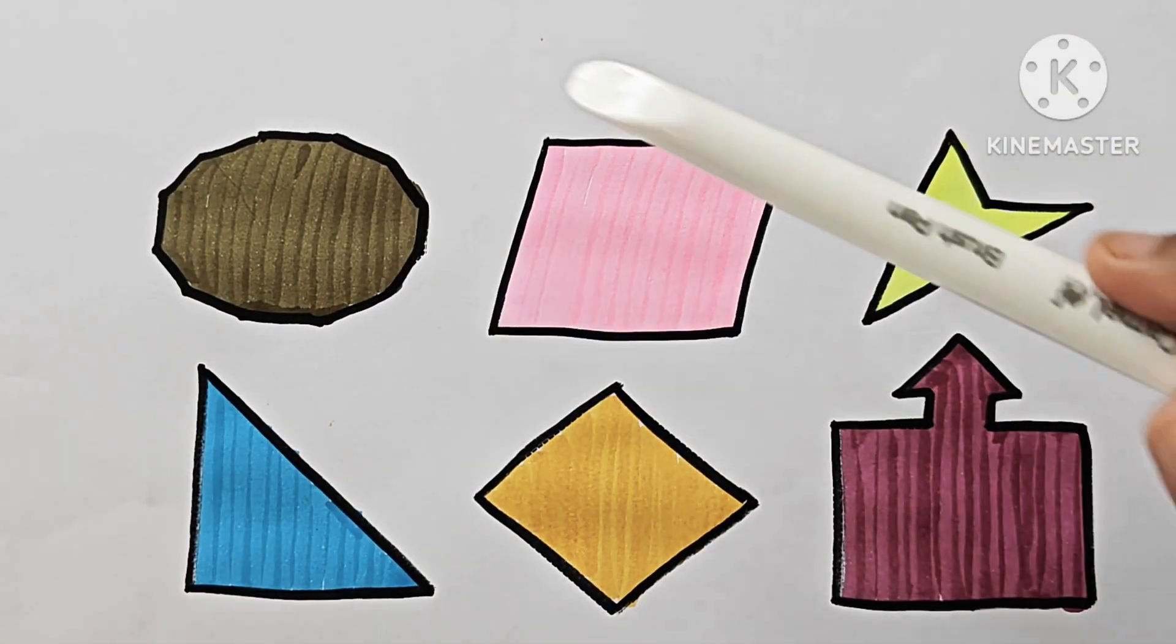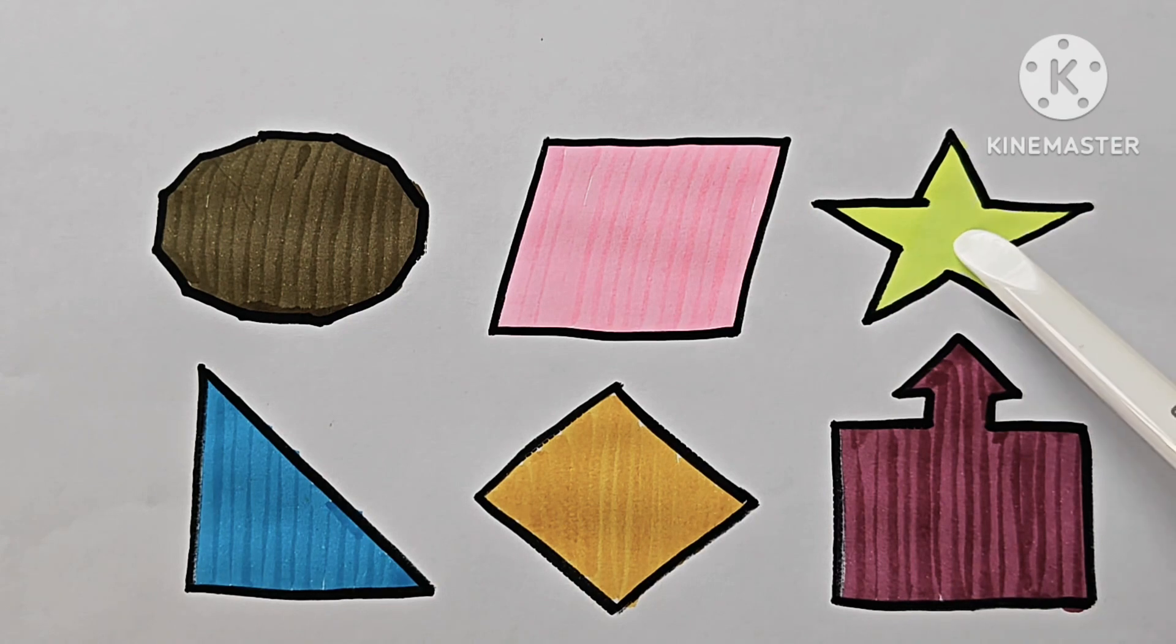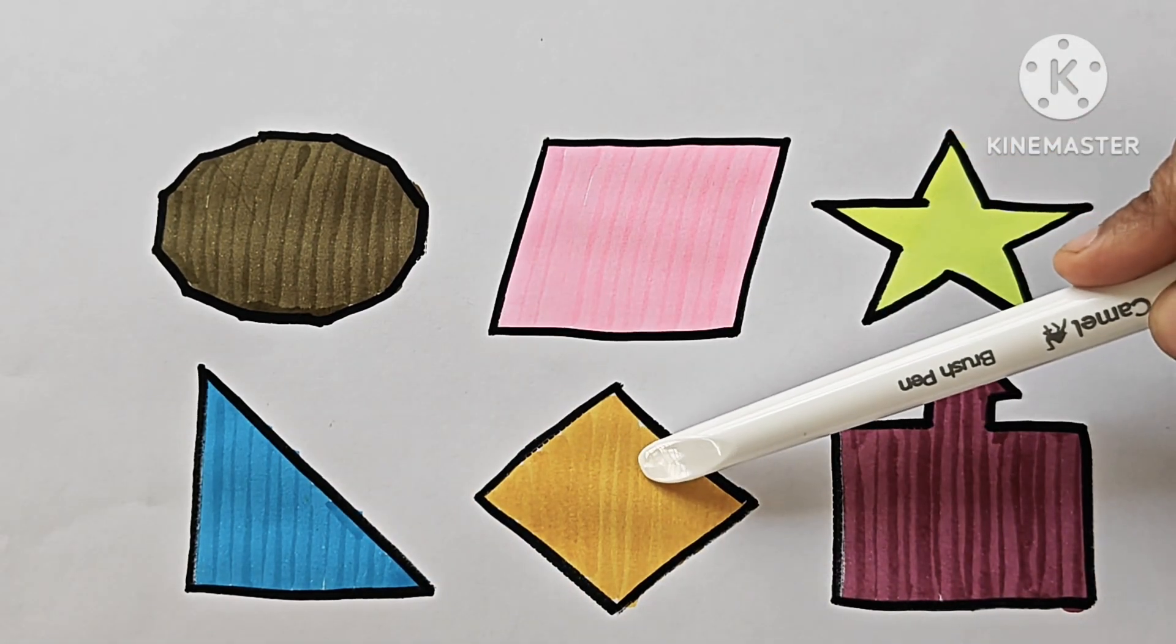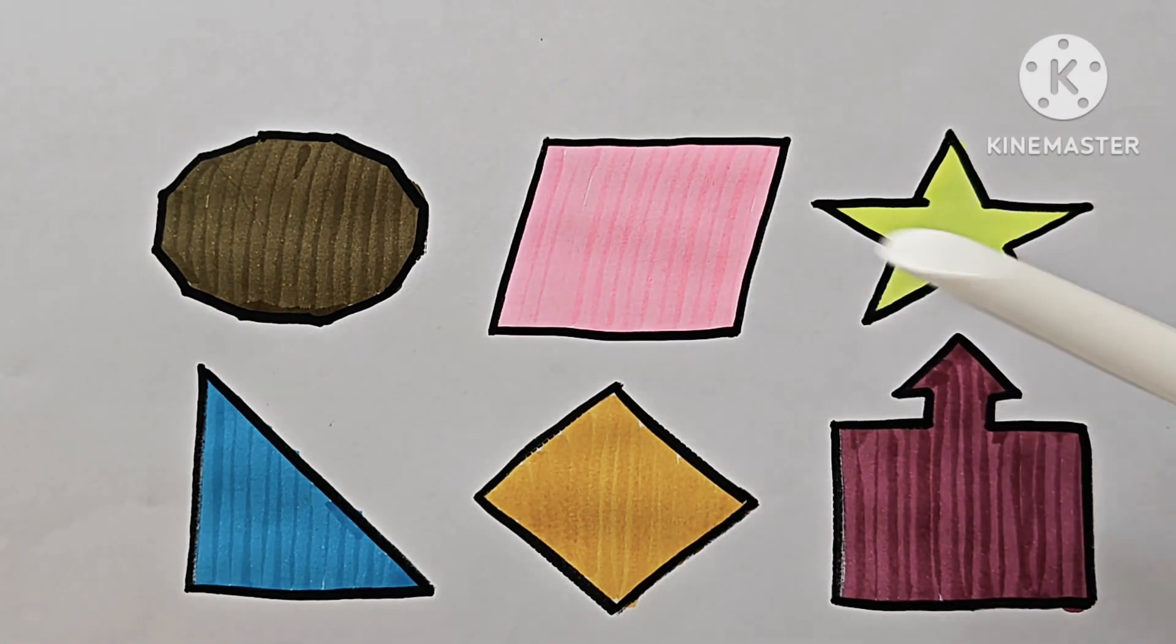This is Rodeca Gun. Parallelogram. 5 pointed star. Right angle triangle. Rhombus, or diamond. Up arrow. Callout.